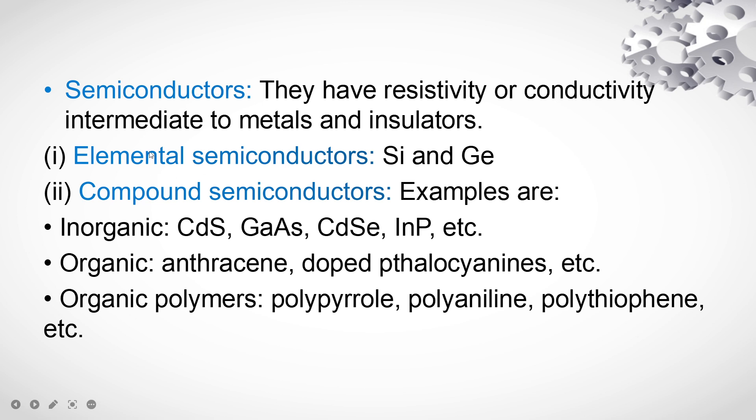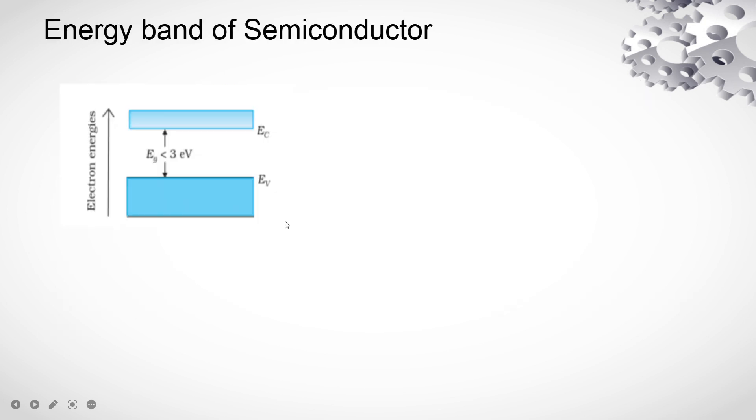There are elemental semiconductors like silicon and germanium, compound semiconductors which are made by mixing two semiconductors. They are also categorized into inorganic, coorganic and halic polymers.